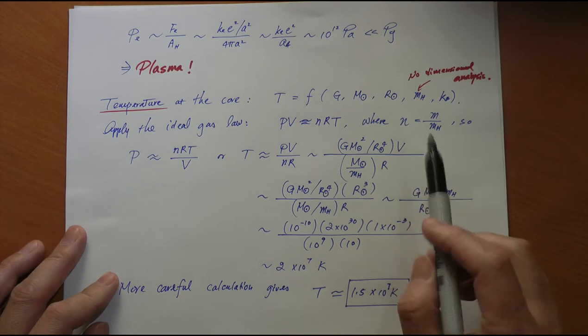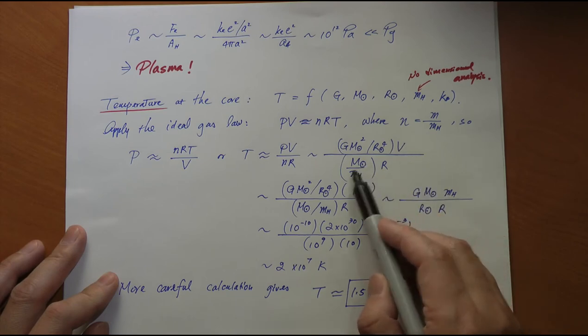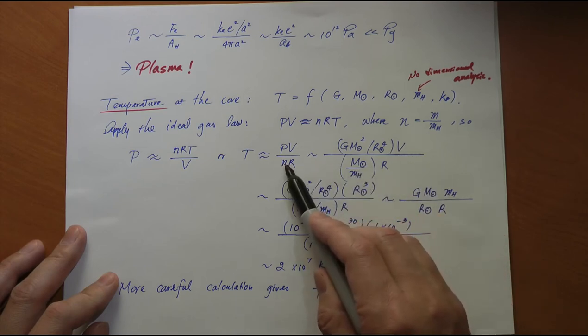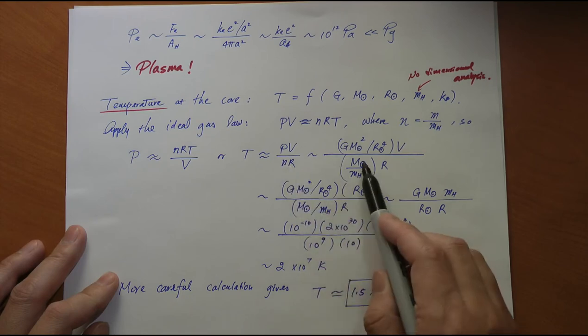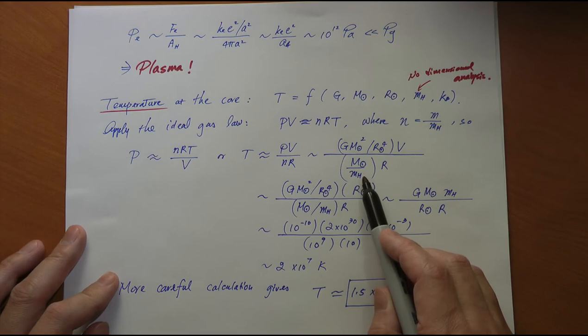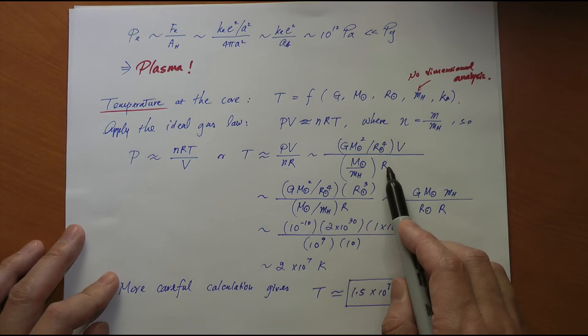The number of moles of hydrogen in the sun. That's the total solar mass divided by the mass of each mole of hydrogen, which is one gram. We're talking about hydrogen nucleus, proton, just about one gram per mole times the universal gas constant R.